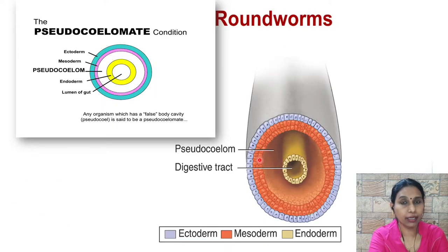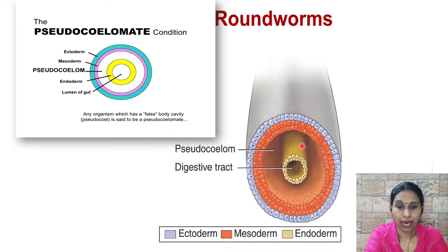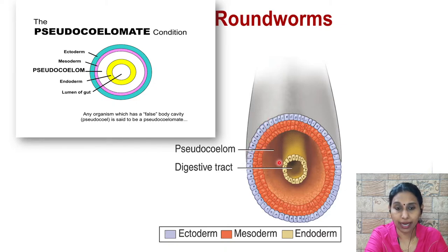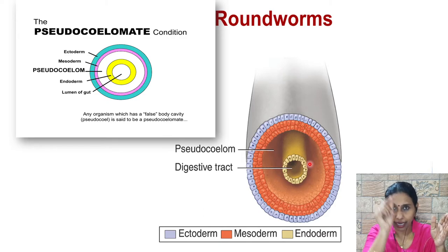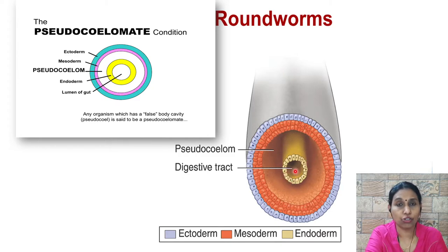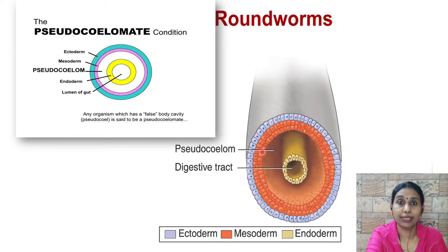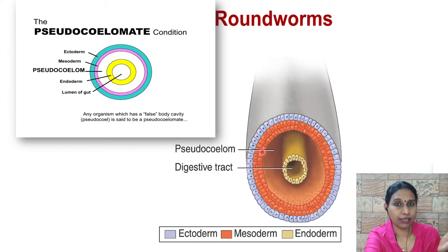To understand the pseudocoelom more clearly, observe this diagram. The blue colour lining is the ectoderm, the yellow colour is the endoderm, and the red colour is the mesoderm. The mesoderm is lining only the inner part of the ectoderm. If it were also lining the outer part of the endoderm — that is, if the mesoderm divided into two layers with a space in between — that space would be called a true coelom. But here that has not happened and the digestive tract has not completely developed; a sort of cavity is present which is called the pseudocoelom. This pseudocoelom is the identifying feature of phylum Nematoda. Comparing: Platyhelminthes was acoelomate whereas Nematodes are pseudocoelomate.